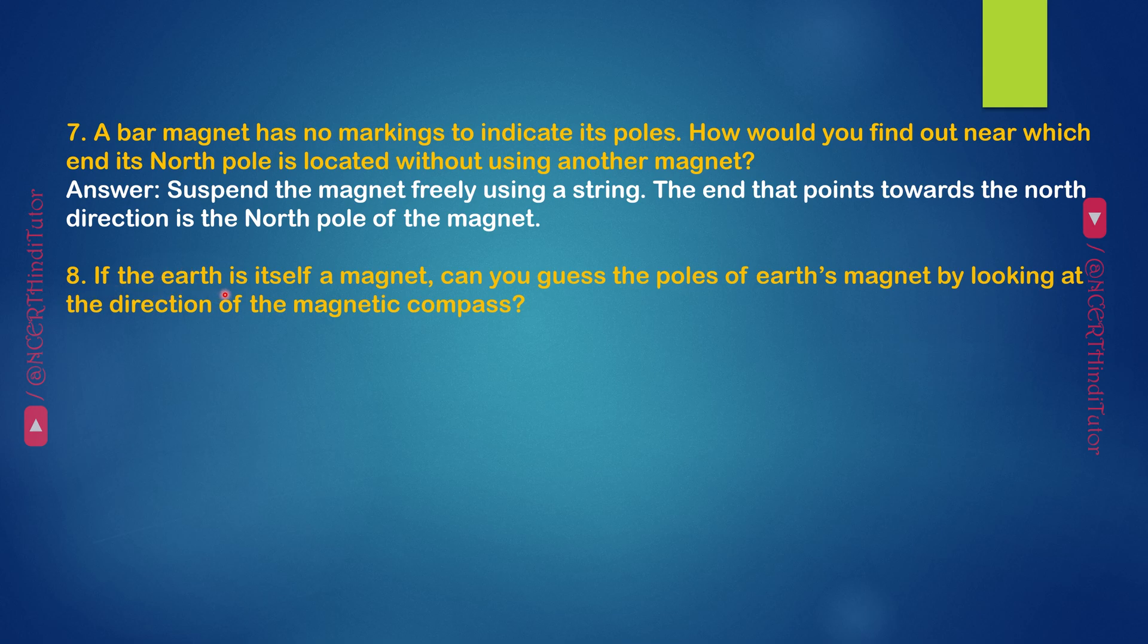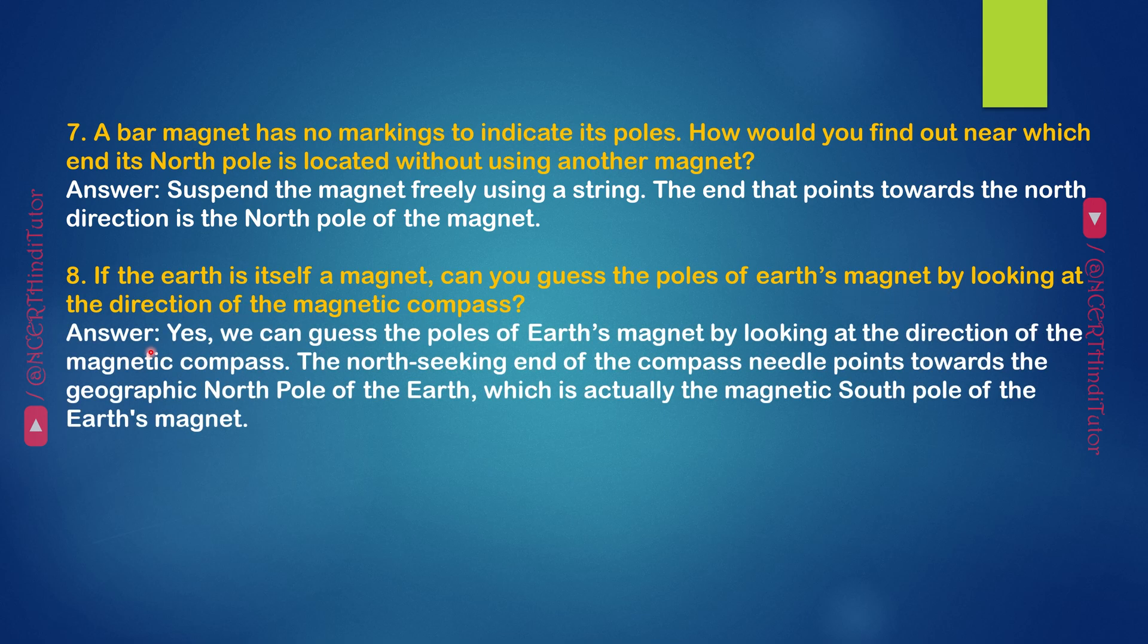Question 8: If the earth is itself a magnet, can you guess the poles of the earth's magnet by looking at the direction of the magnetic compass? Answer: Yes, we can guess the poles of the earth's magnet by looking at the direction of the magnetic compass. The north-seeking end of the compass needle points towards the geographic north pole of the earth, which is actually the magnetic south pole of the earth's magnet.